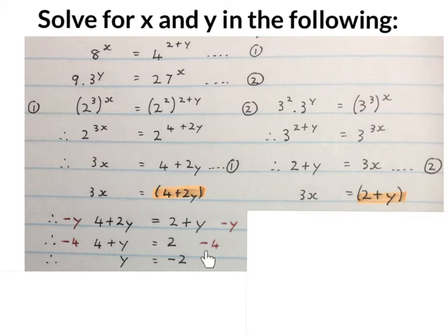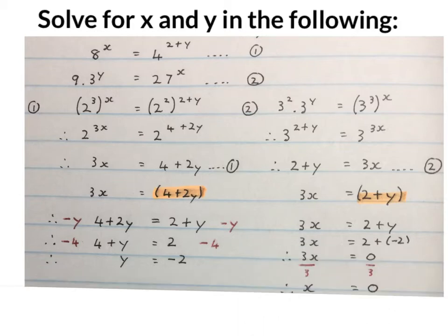I rewrite the equation I'm going to use. I substitute Y with -2 and I find my final value for X. Divided by 3 on both sides, so X equals 0.